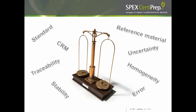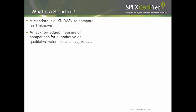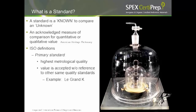Now if we look at the alphabet soup of terminology, we'll start with the first question: what is a standard? The simplest answer is that it is a known compared to an unknown, or it is an acknowledged measure of comparison for a quantitative or qualitative value. ISO designates a primary and a secondary standard. A primary standard is the highest metrological quality, and its value is accepted without reference to a similar quality standard.